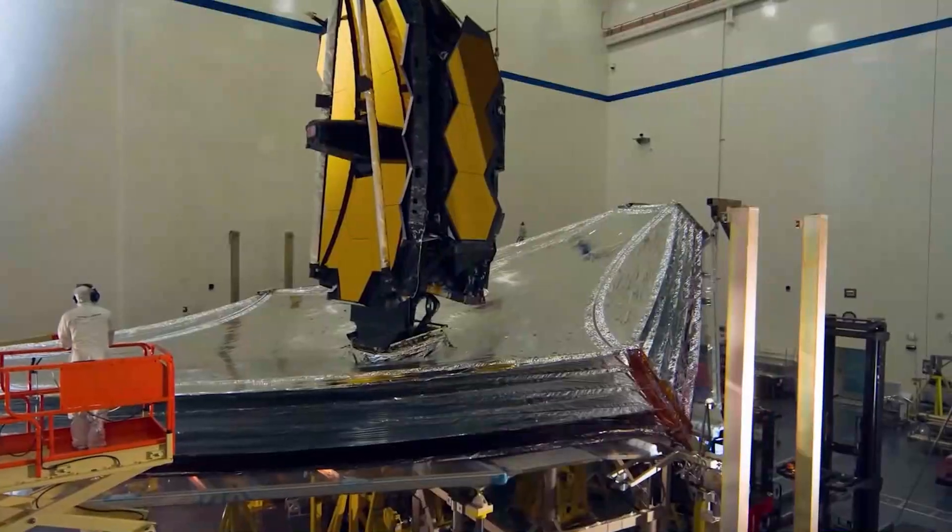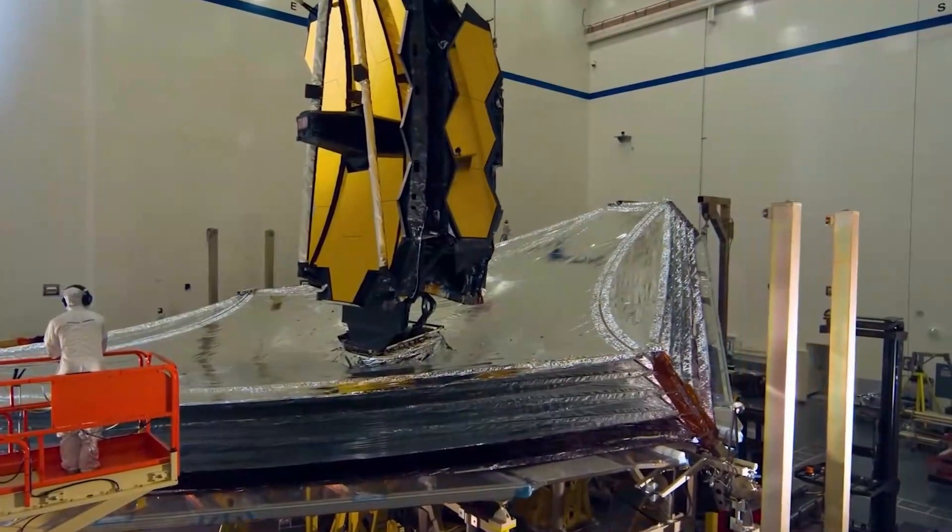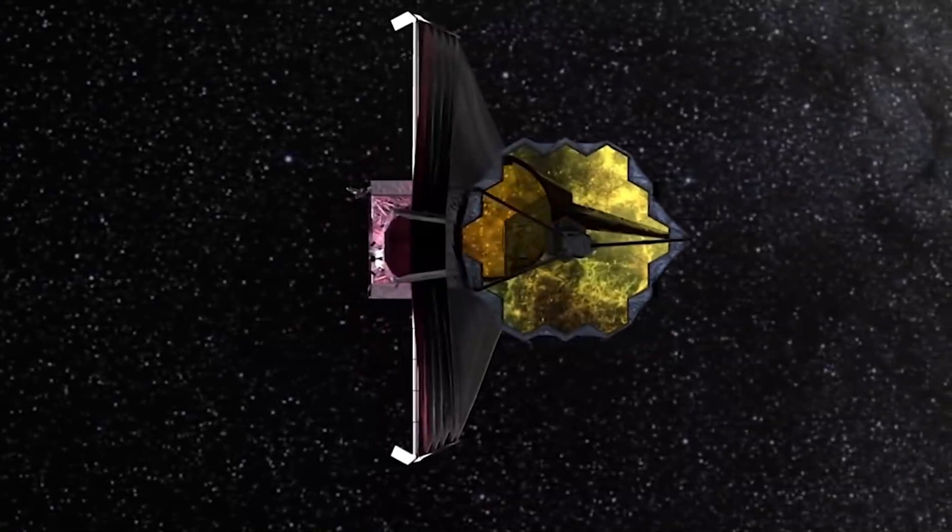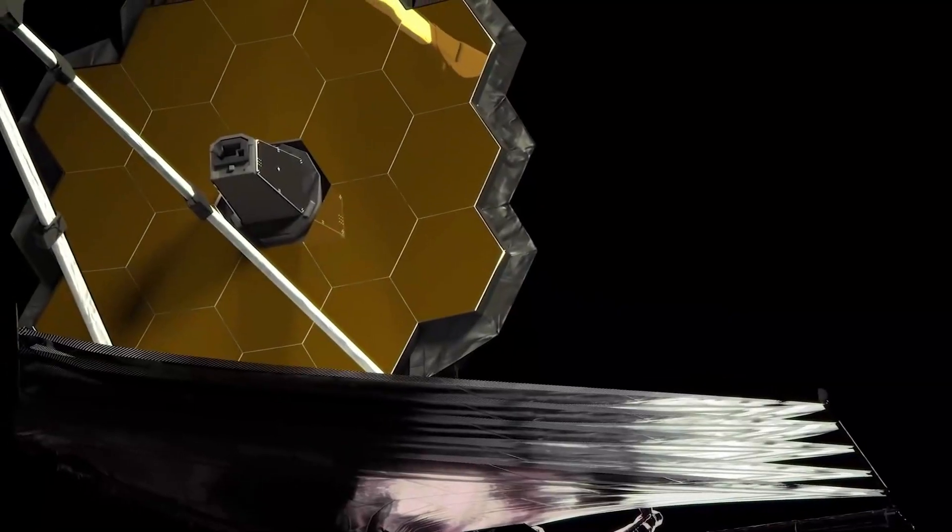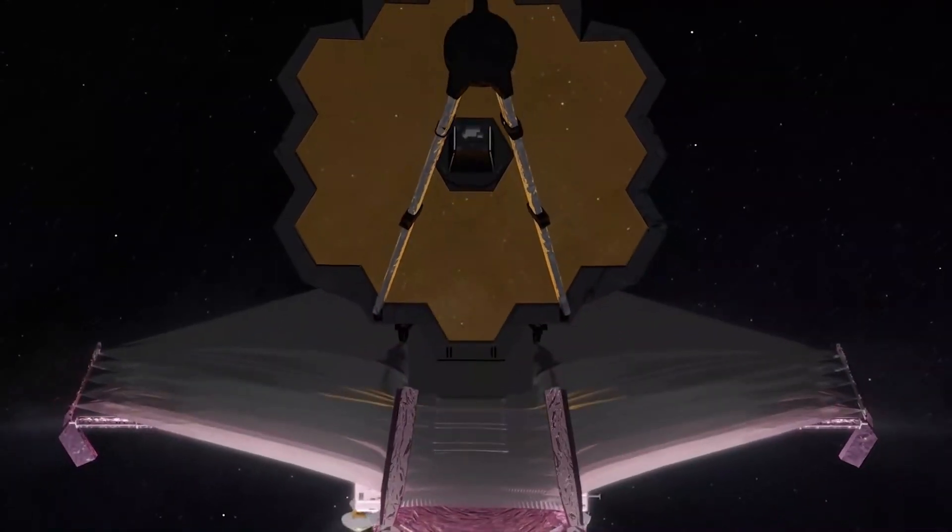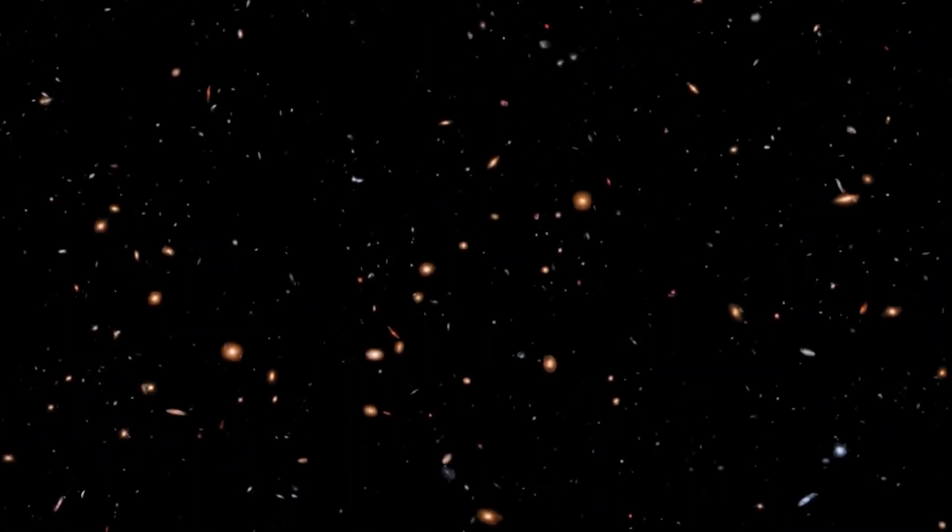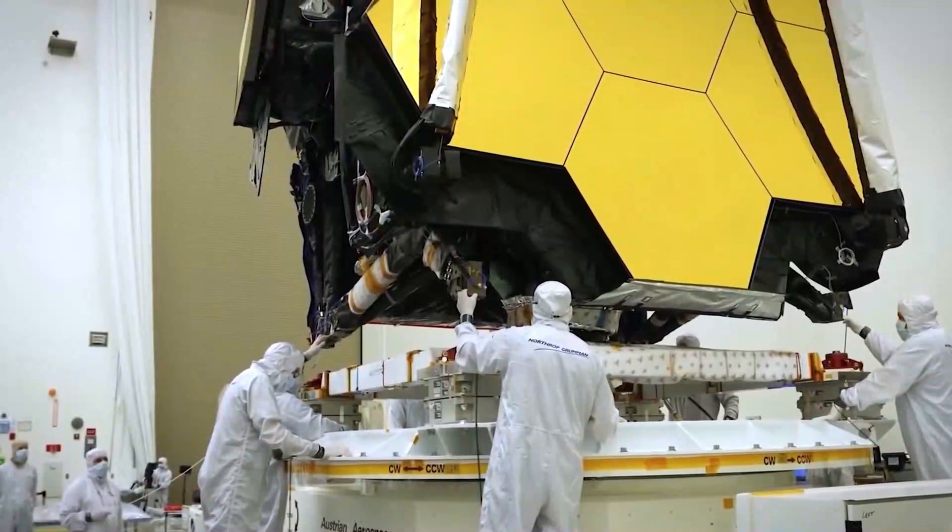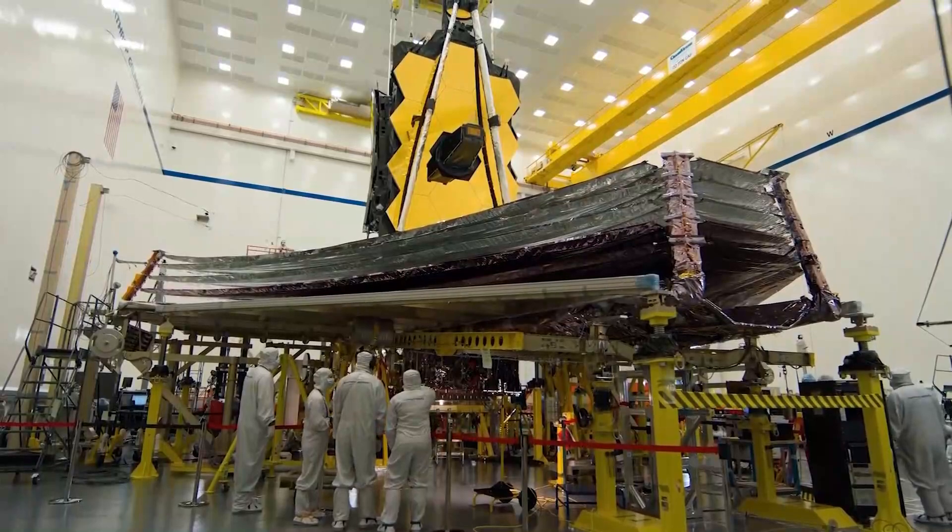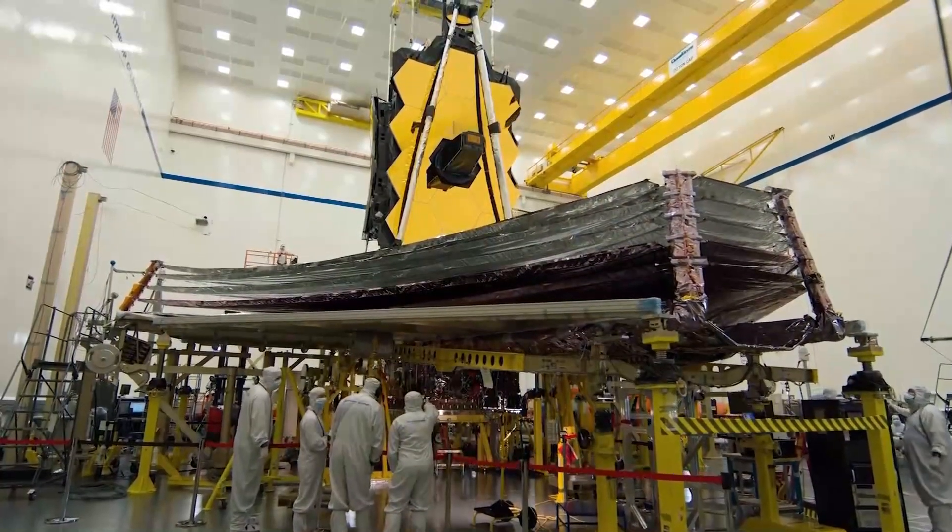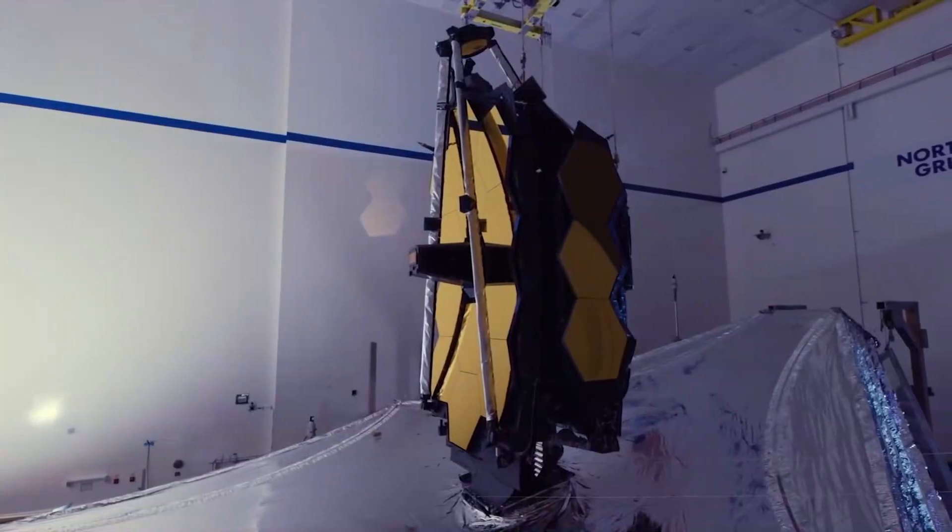If everything had gone according to plan, the world's most powerful space telescope would have been in orbit by 2018. It would be tens of millions of miles away from Earth by now, staring deep into the universe and sending back breathtaking photographs of sparkling stars and galaxies. Instead, it sat at a California factory until a few months ago, waiting for more funding so that engineers could complete the project.